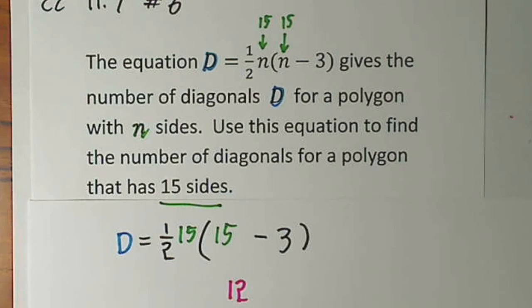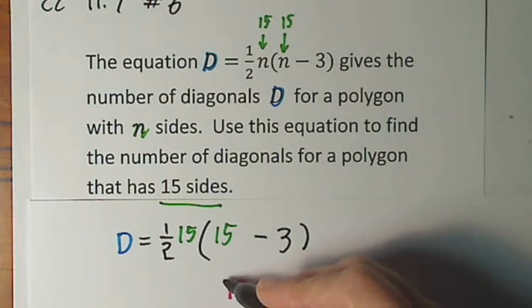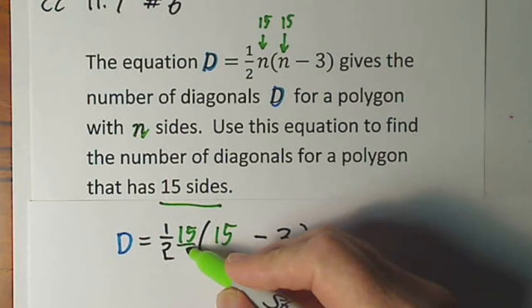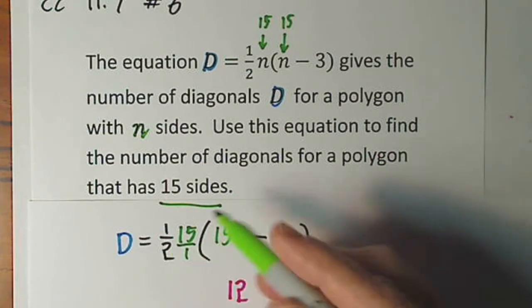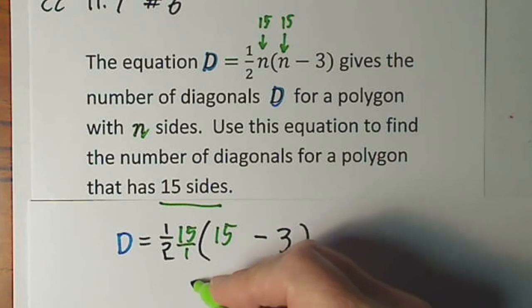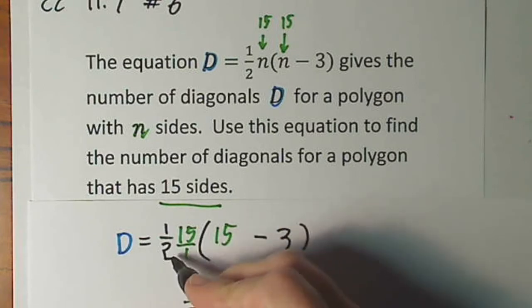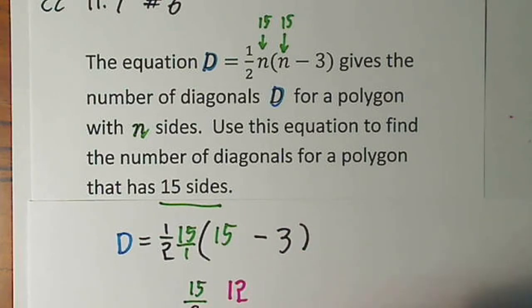One-half times 15. Let me see, this can be written as 15 over 1, so if I multiply these I'll have 15 over 2, right? 1 times 15, 2 times 1, 15 over 2.